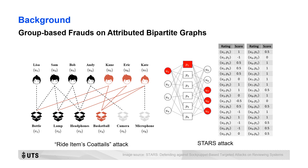In recent years, group-based fraud attacks have been appearing in large numbers in transactions on various e-commerce platforms. For example, the Ride Items for Tails attack is a fraudulent group's use of fraudulent clicks to deceive the recommendation system into associating popular items with target items, thereby increasing the recommendation of target items to users. Another example is the Stas attack, where a fraudulent group conducts a large number of fake ratings to control product ratings.